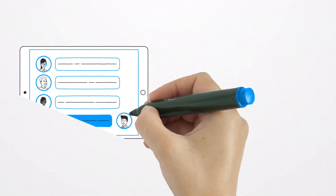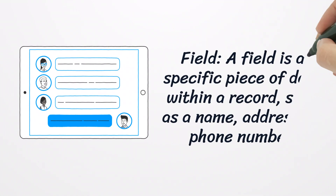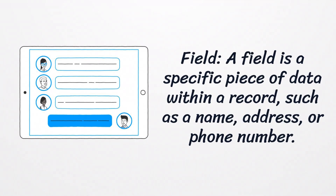Field. A field is a specific piece of data within a record, such as a name, address, or phone number.